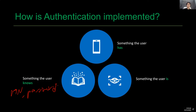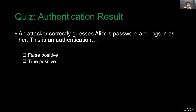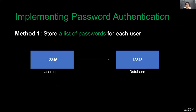Quick quiz: an attacker correctly guesses Alice's password and logs in as her — this is known as an authentication what? A) false positive, or B) true positive. The answer is false positive. When an attacker authenticates as another person, that is an authentication failure, and consequently that is an authentication false positive — something that we do not want.